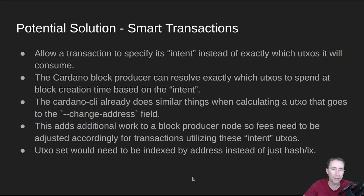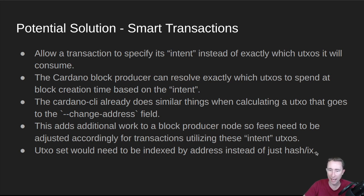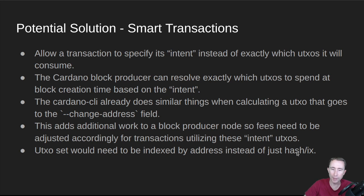Another issue that will have to be overcome is that the UTXO set would need to be indexed by address instead of just by hash and index. Currently, a node only knows about hashes and indexes — if you ask for all UTXOs on a given address, it has to search everything to find matches. It's not indexed by address, so it can't quickly retrieve those UTXOs. That would have to change to make things faster.